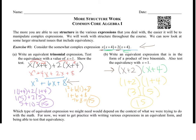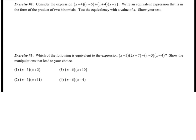So you have seen three different forms: the factored form, the somewhat complex form, and the simplified form — all equivalent expressions. Now consider the expression X plus 4 times X minus 5, plus X plus 4 times X minus 2. Write an equivalent expression that is in the form of the product of two binomials, and test the equivalency with a value of X. Show your test. We need to find what is the same between the two.